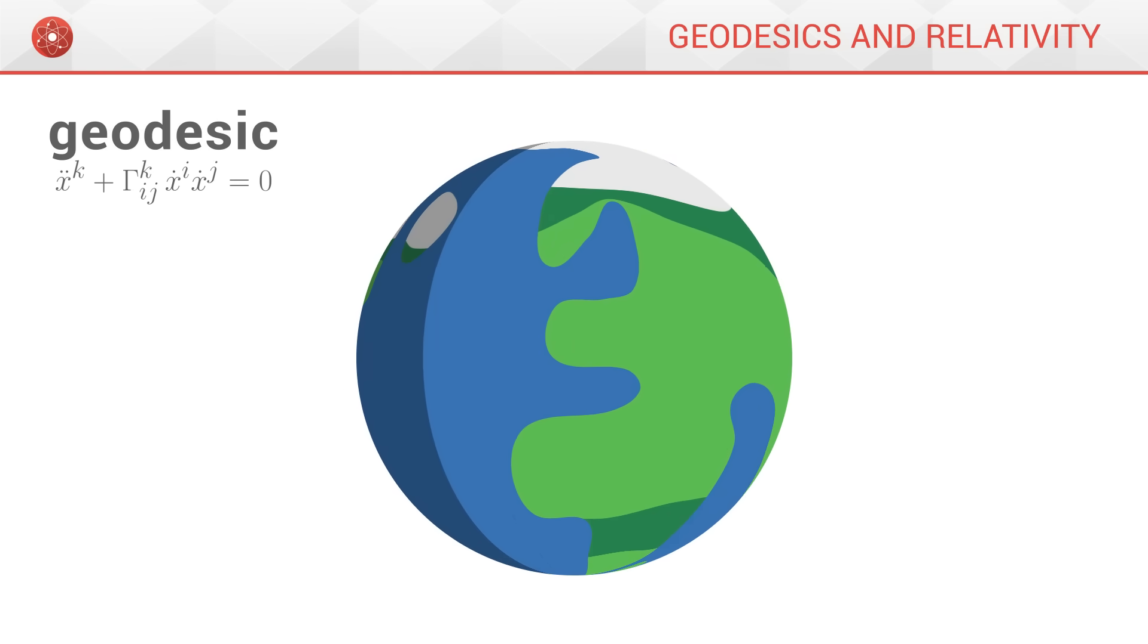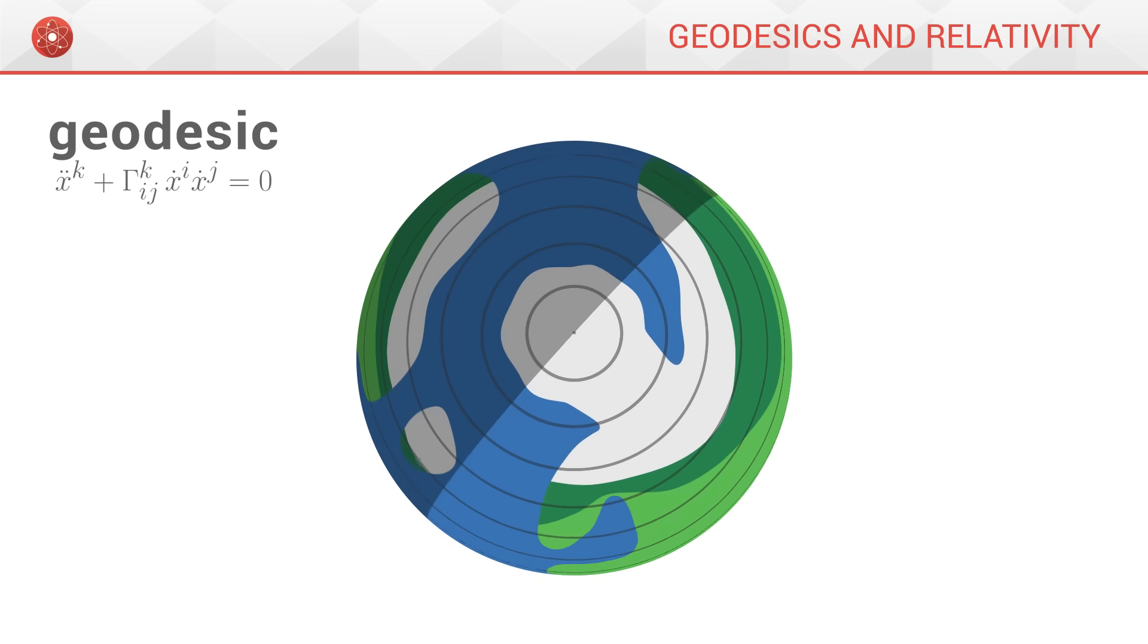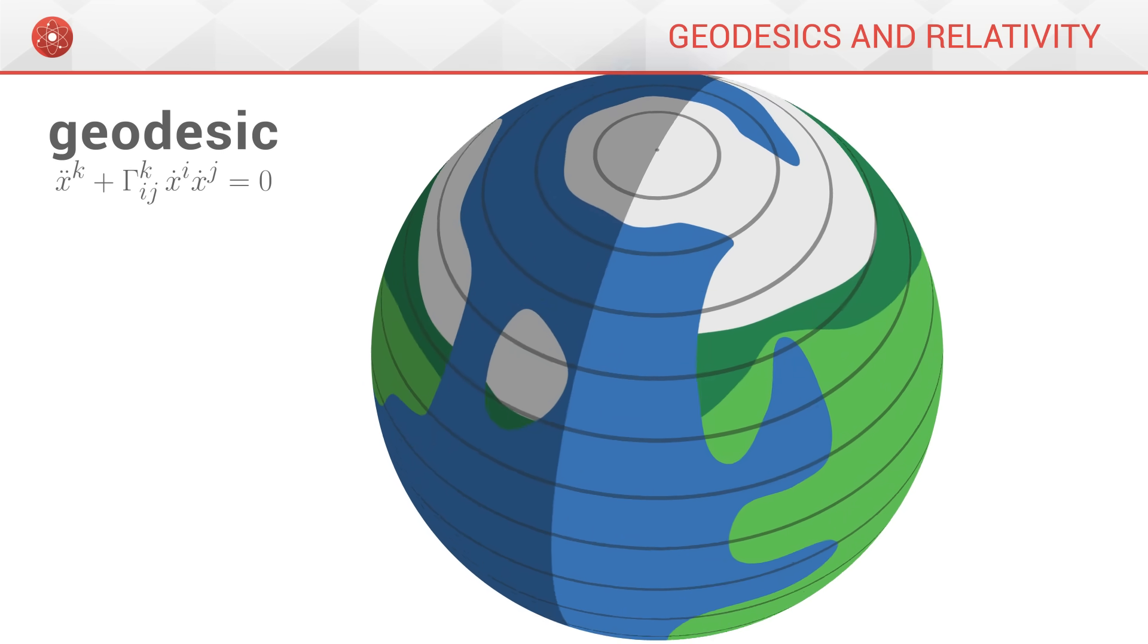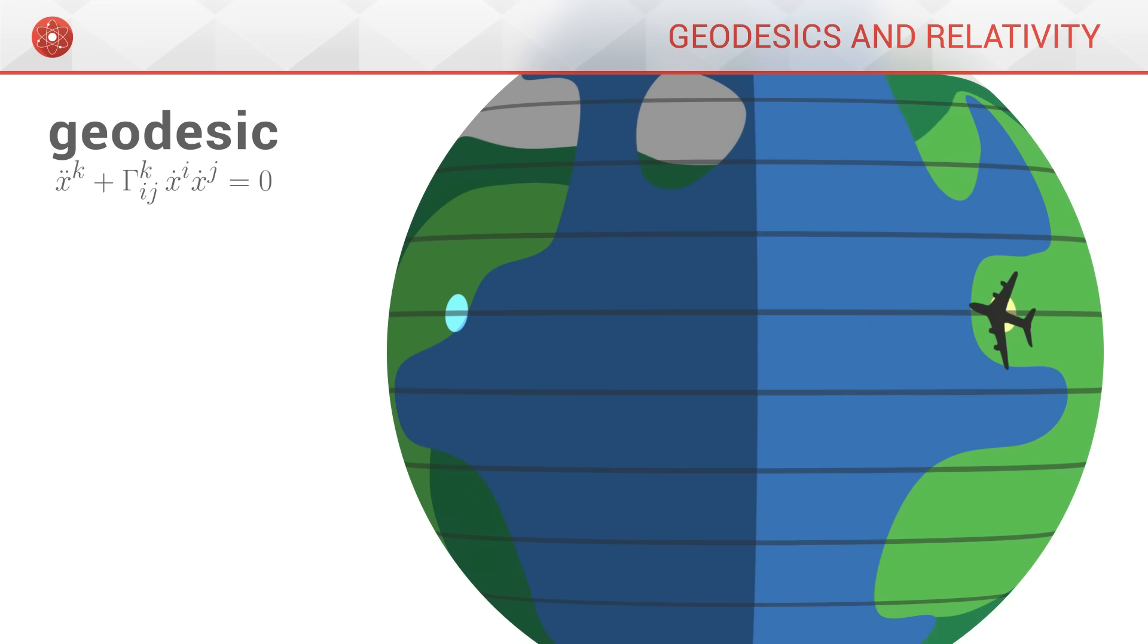On the other hand, apart from the equator, lines of latitude are not geodesics. They are not great circles on the sphere. To connect two points at the same latitude, such as Paris and Quebec, there is a faster path.